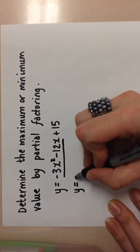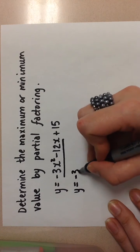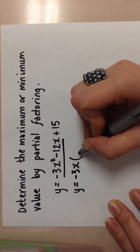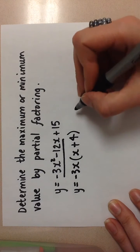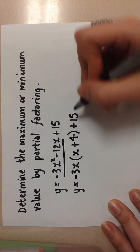So here, my common factor is going to be -3x. I'm going to be left with x + 4 in the brackets, and outside the brackets I will have the +15.